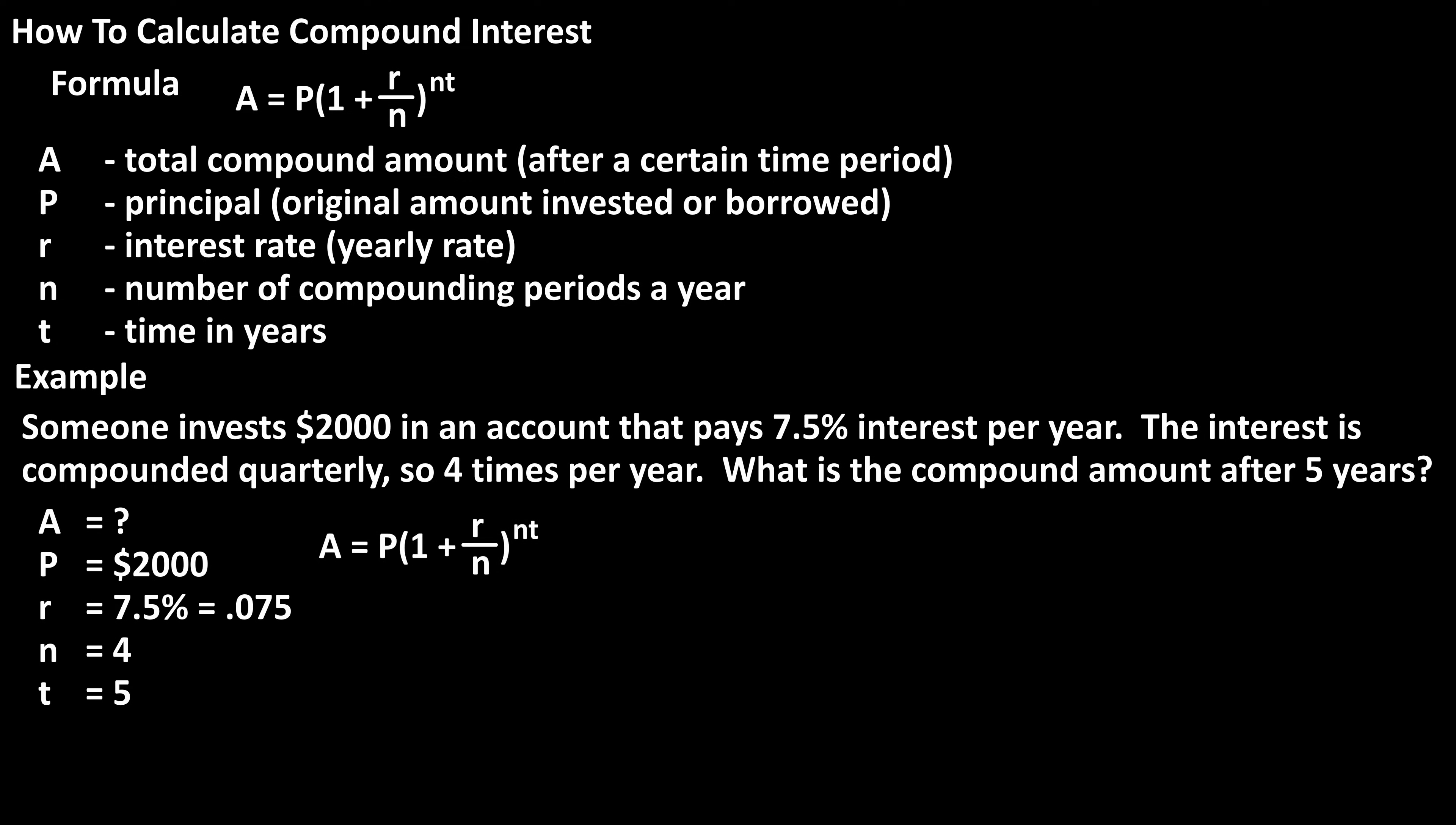Now we can plug into the formula. We have A equals $2,000 times the quantity 1 plus .075 divided by 4, raised to the 4 times 5. .075 divided by 4 equals .01875, and 4 times 5 equals 20.